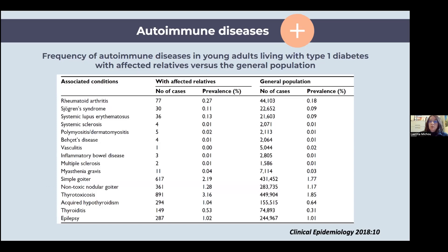In young adults with type 1 diabetes, if relatives have autoimmune diseases, those individuals may also have more autoimmune diseases. The broader spectrum includes rheumatoid arthritis, lupus, vasculitis, and mostly thyroid disorders — either thyrotoxicosis or hypothyroidism — which is very frequent in the general population but even more so in patients with autoimmune diseases.